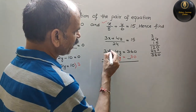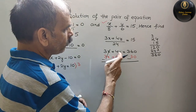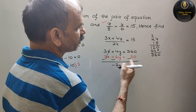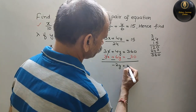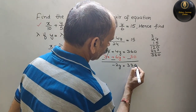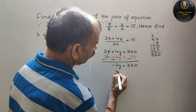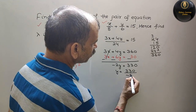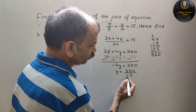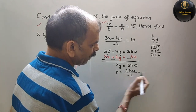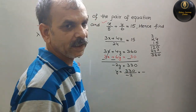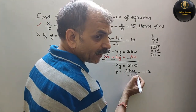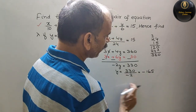Subtract करने पर: 3x - 3x cancel हो जाते हैं। 4y - 6y = -2y। और 360 - 30 = 330। तो -2y = 330, जिसका मतलब y = 330 / (-2)। Reduce करने पर y की value = -165.